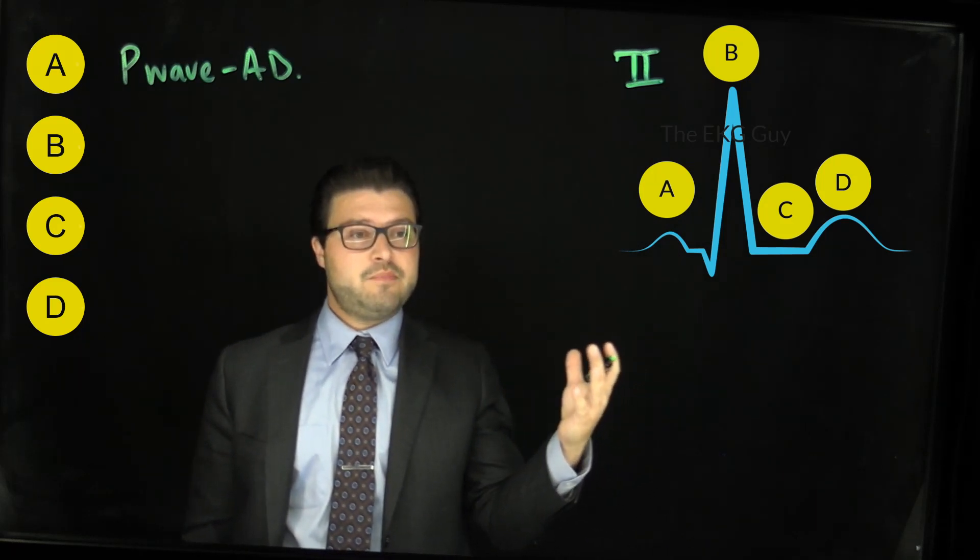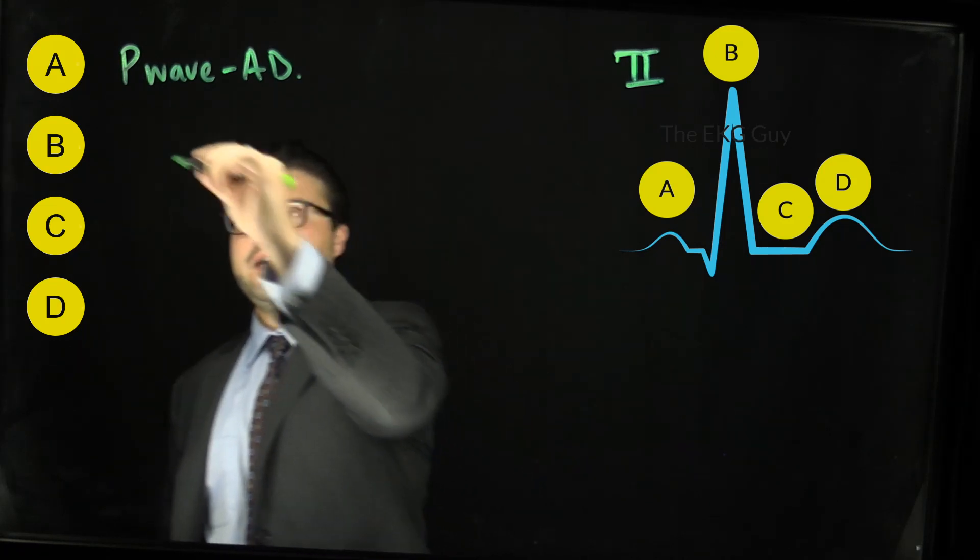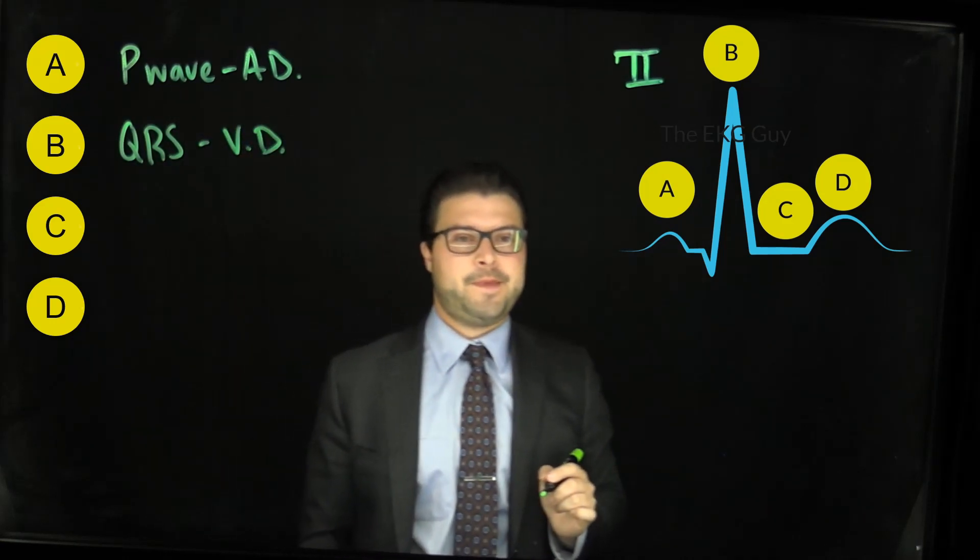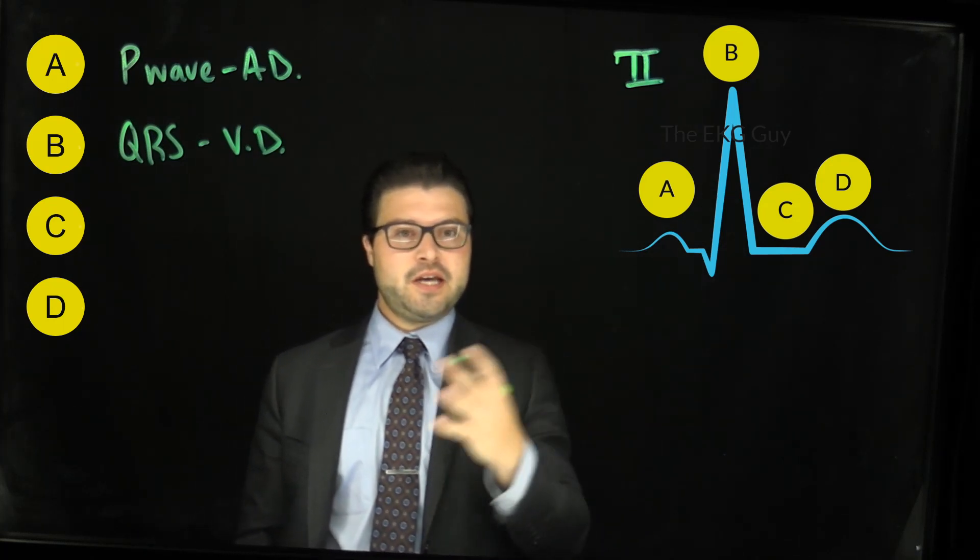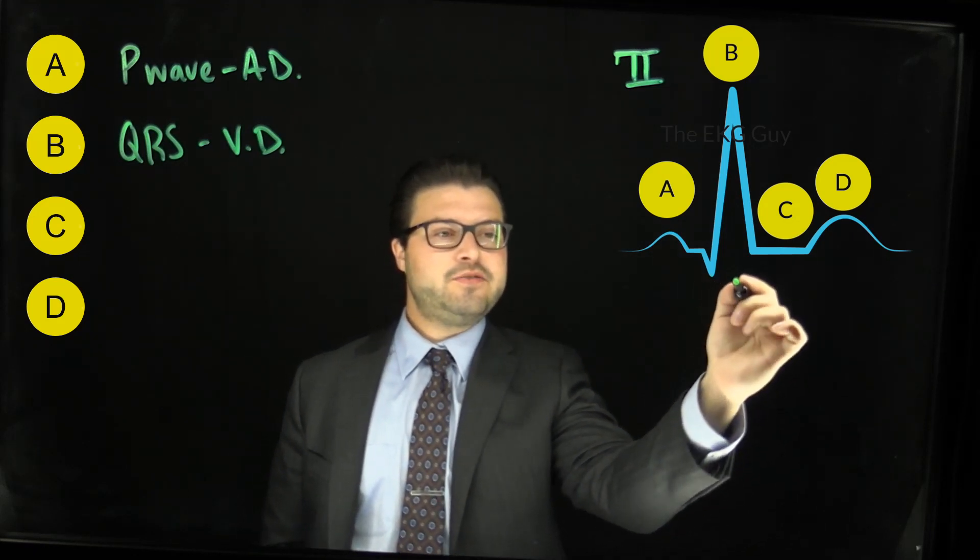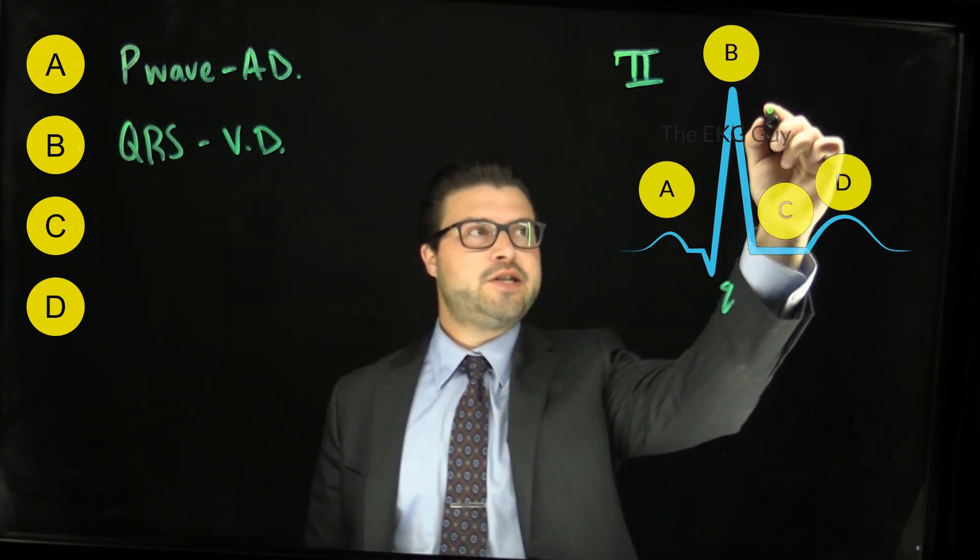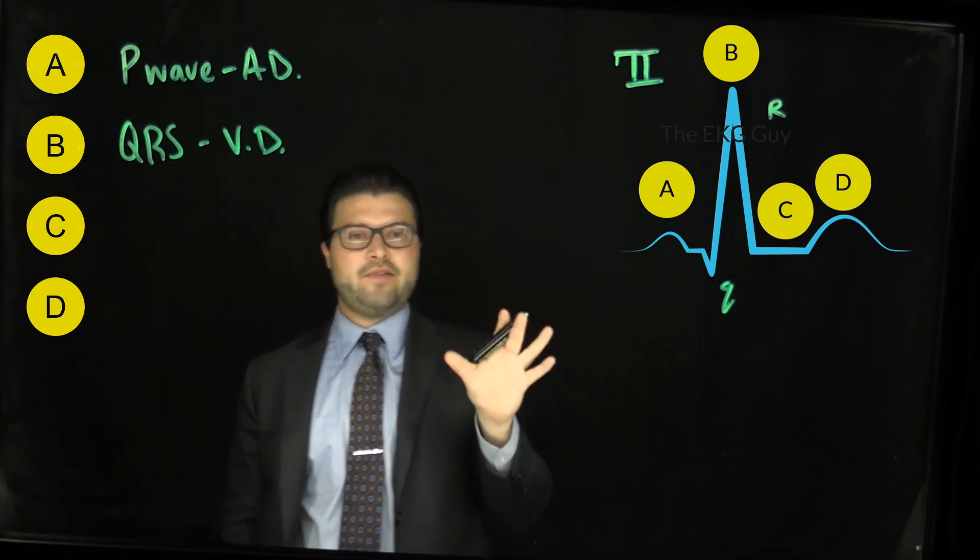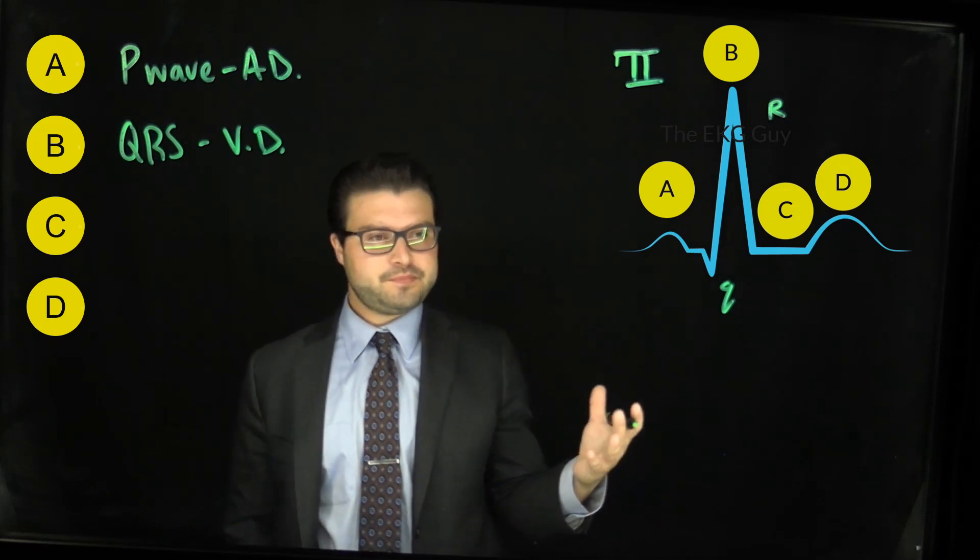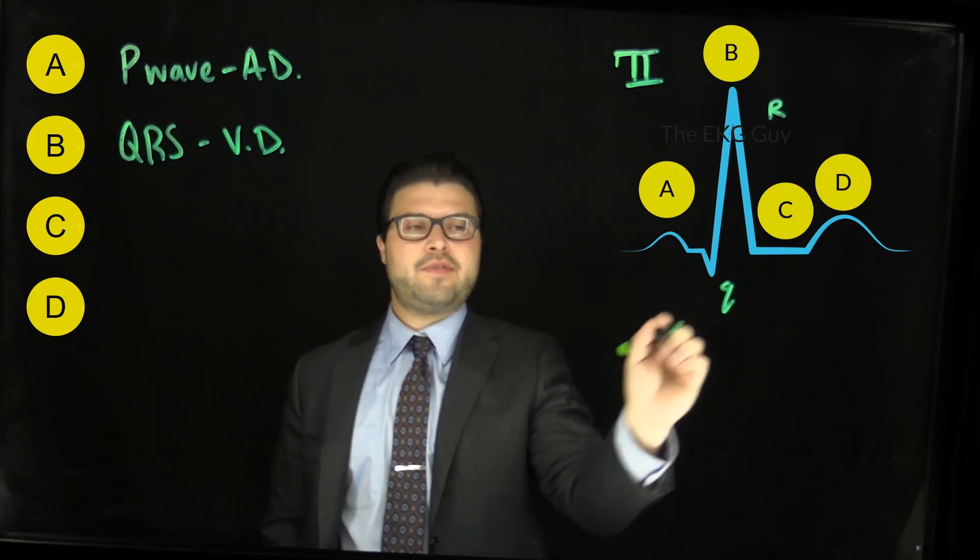Now if we look at B, what you see here is part of what we call the QRS complex. The QRS complex represents ventricular depolarization. That small negative deflection that you see here is actually a Q wave, and that large deflection here is an R wave. So despite it not having an S wave, we still refer to it generally as a QRS complex representing ventricular depolarization. This is not an S wave here because an S wave would come after an R wave.